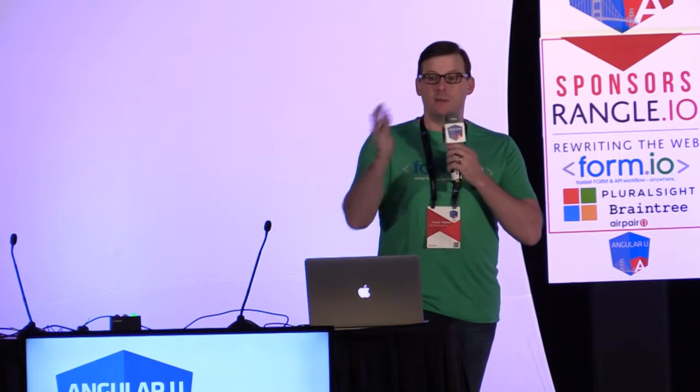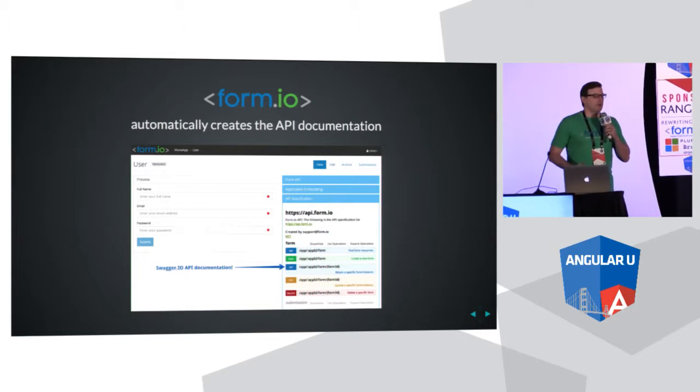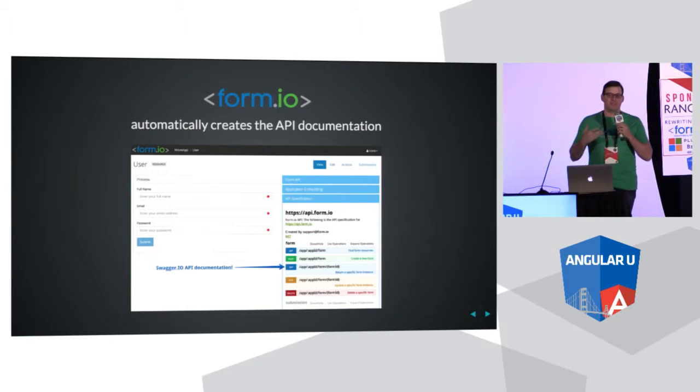On the left-hand side, you have the form that you just created, which was very easy. On the right-hand side, you have this API that you now have at your fingertips. You can use the API without the form and vice versa — it's a very flexible system. It also automatically creates API documentation through the use of Swagger.io, which is a very powerful tool. And with Swagger.io, you also have CodeGen capabilities that allow you to build your own SDKs for that API.